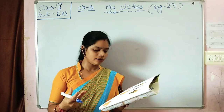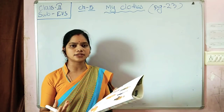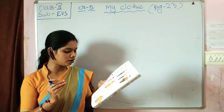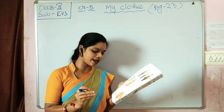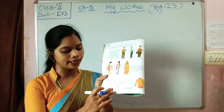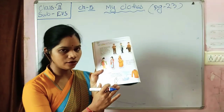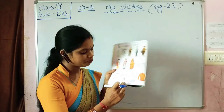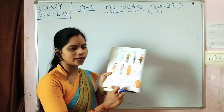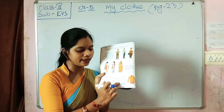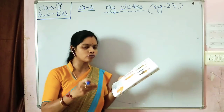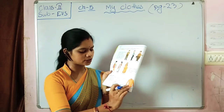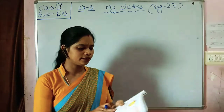Now let's learn how clothes are made. Clothes are made from different materials. Cotton clothes are made from cotton plants. Cotton is spun into thread, and these threads are woven into cloth.